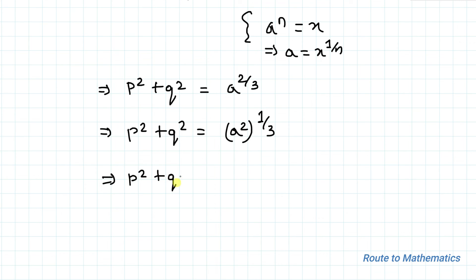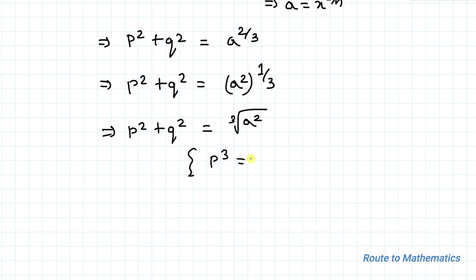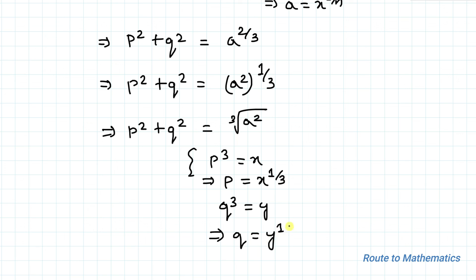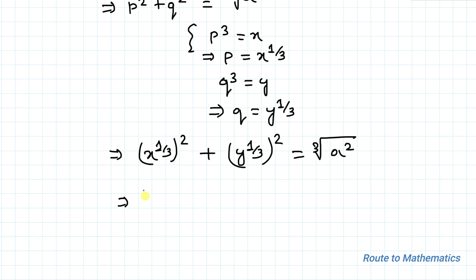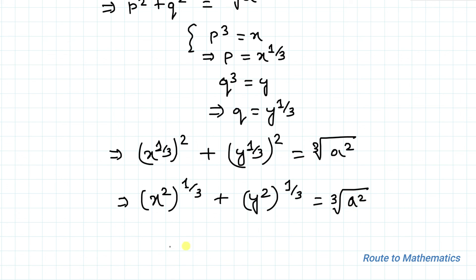Since p² = x^(2/3) and q² = y^(2/3), substituting back: (x^(1/3))² + (y^(1/3))² = ∛(a²). In the next step this can be written as x^(2/3) + y^(2/3) = ∛(a²), that is ∛(x²) + ∛(y²) = ∛(a²). Hence we have proved the equation.